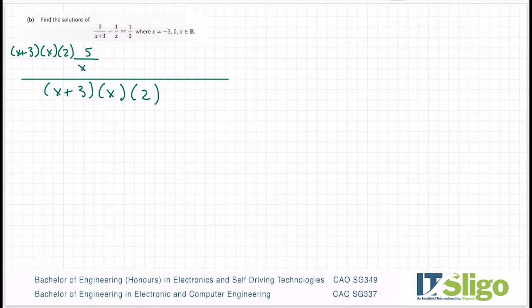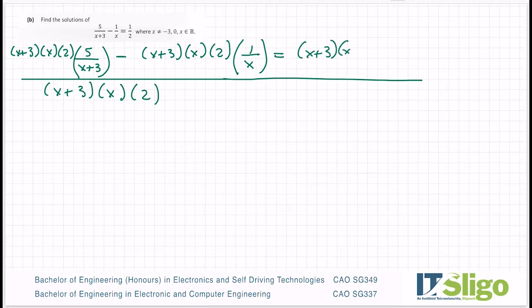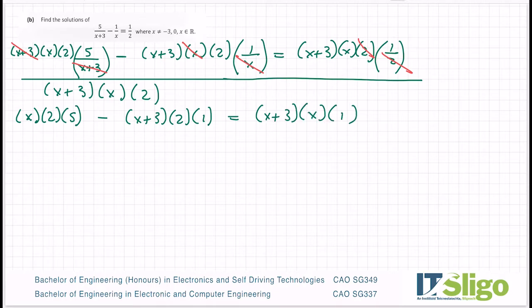And then you take that common denominator and you multiply it by each individual bit of your fraction. So I'm going to multiply it by 5/(x+3). So then I have the minus and I take that common denominator again, and I multiply it by 1/x. And it's equal to, and I take that common denominator again, and it's multiplied by 1/2. And what happens then is the bottom of each piece will cancel with its common piece on the top.